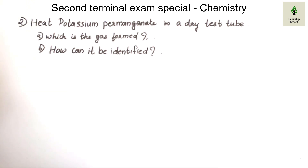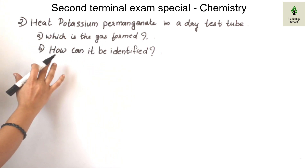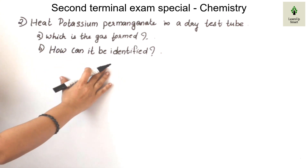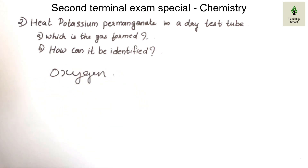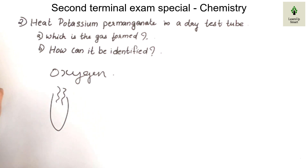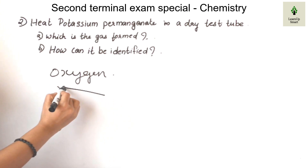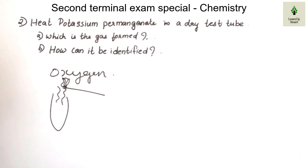In that equation, when potassium permanganate is heated, the products are potassium manganate, manganese dioxide, and oxygen. The gas formed is oxygen. To identify oxygen gas — if the gas is in a test tube, it is not just any gas. We need oxygen to identify it. The gas supports burning.